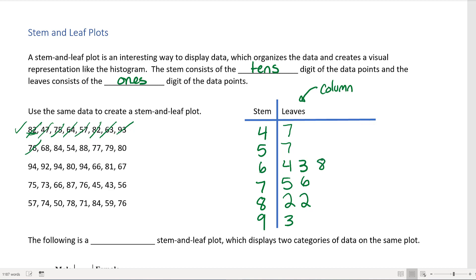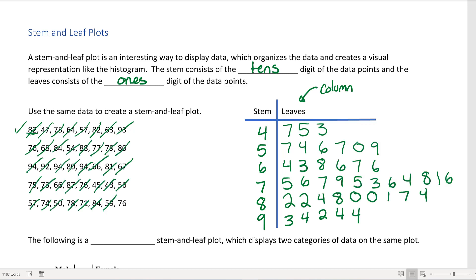Go ahead and pause the video and fill in the rest on your own. So this is my completed stem-and-leaf plot. Notice that all of the columns are nicely lined up, so that the longer your leaves are, that means the more frequent they show up in the frequency distribution.